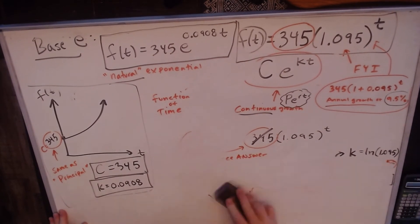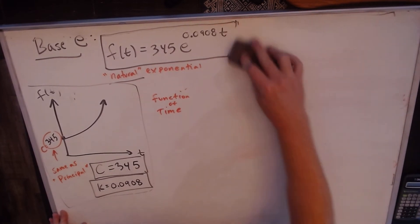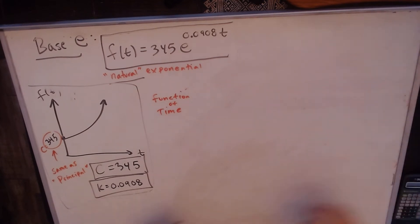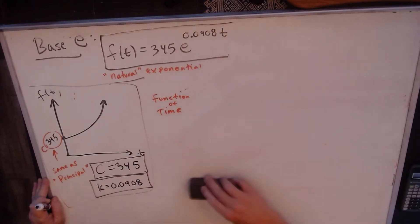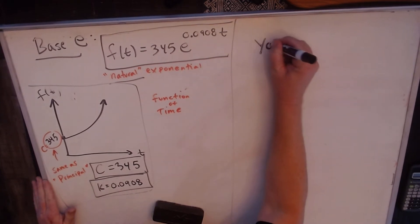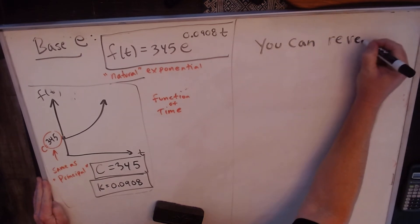Nature is always continuous. The birds and the bees and the flowers and the trees, they're always continuously either growing or decaying depending on which side of the street we're looking at. So if you look at these side by side, these two functions are identical. This is a base 1.095 and this is a base e, but they produce exactly the same values. They both have the same graph. And you can also go the other way.